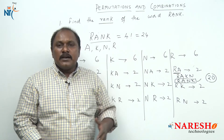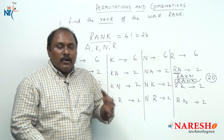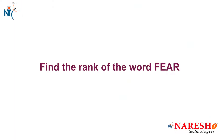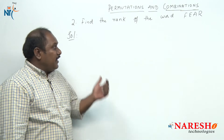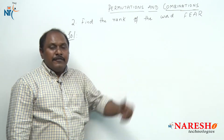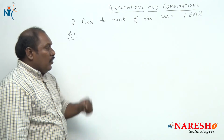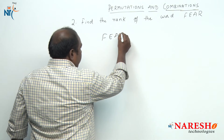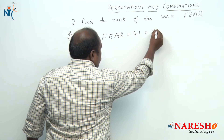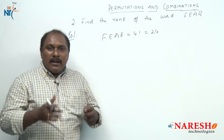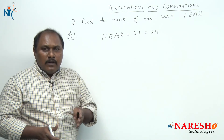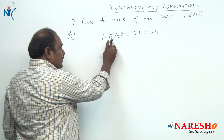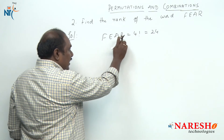But writing all this is a very huge task and it becomes very difficult. Now let us take another word and try to solve it in a simple way. The next question: find the rank of the word FEAR. We know that the letters of the word FEAR can be arranged in four factorial ways, which is 24. So my rank lies from 1 to 24.